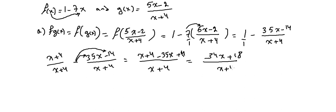That gives us minus 34x plus 18 over (x plus 4). Since we have x plus 4 in the denominator, we must state that x plus 4 ≠ 0, meaning x ≠ minus 4. That's the domain condition for part a.